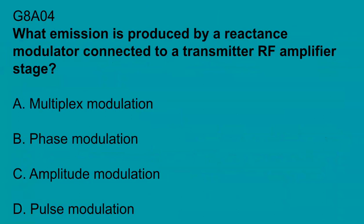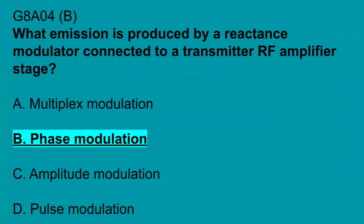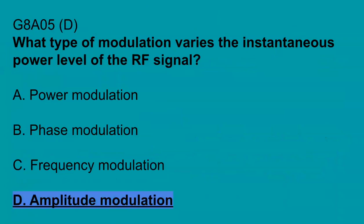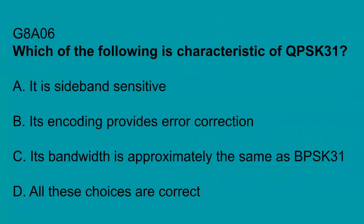G8A04: What emission is produced by a reactance modulator connected to a transmitter RF amplifier stage? Phase modulation. G8A05: What type of modulation varies the instantaneous power level of the RF signal? Amplitude modulation, AM.